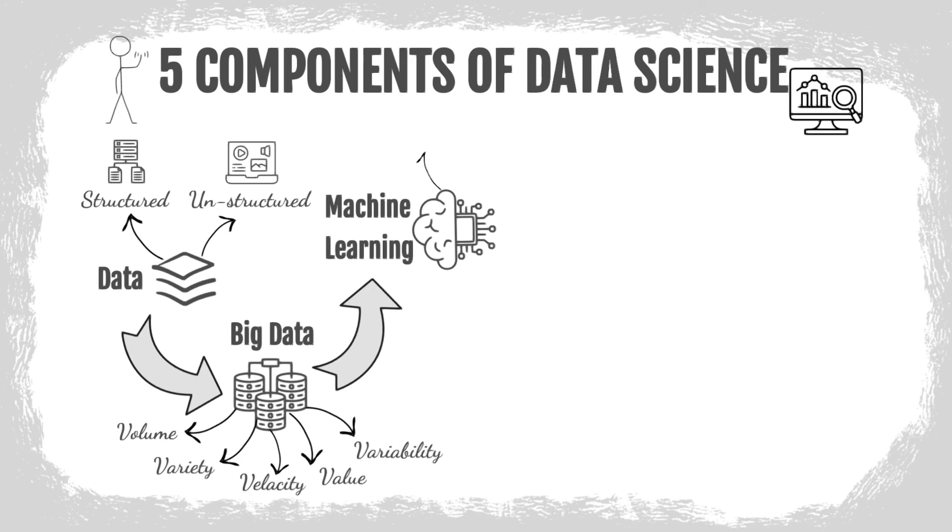There are three types of machine learning. Supervised learning. It is the machine learning task of learning a function that maps an input to an output based on example input-output pairs.